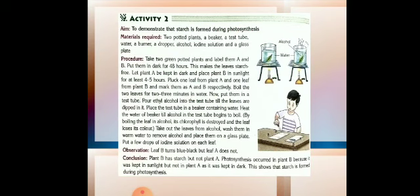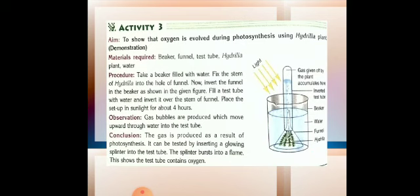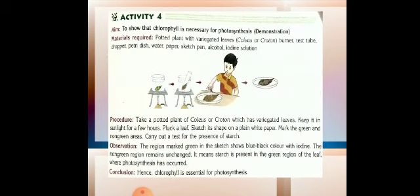Today I am going to explain activity number four, which shows that chlorophyll is very necessary and important for photosynthesis — it is one of the conditions. In the absence of chlorophyll, photosynthesis will not take place and the plant won't be able to produce its food, which is in the form of glucose and is then converted into starch.